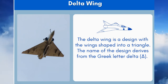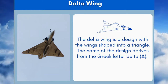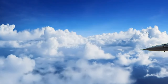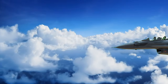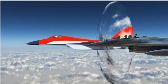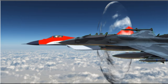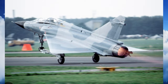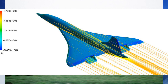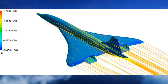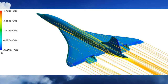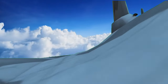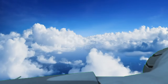4. Delta Wing Design. The delta wing is a design with the wings shaped into a triangle. The name derives from the Greek letter delta. Delta wings are a configuration typically used in military aircraft due to their suitability for subsonic and supersonic flight when paired with jet engines. Due to its design, at low speeds delta wings require a high angle of attack to maintain lift. Some of the most notable aircraft with delta wings include the Dassault Mirage 3 and the Avro Vulcan.